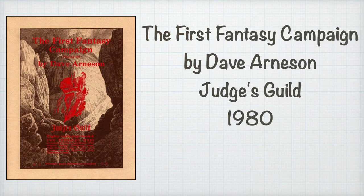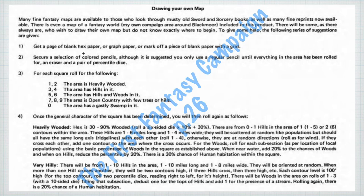Hi friends, this is Joe. This is the fourth week of OSR October, one more to go. For OSR October, I've been looking at Dave Arneson's First Fantasy Campaign — his notes on his Blackmoor campaign that he was running before he and Gary Gygax developed D&D — just looking at the way things were done back then versus more modernly. And today I am looking at Wilderness Generation.